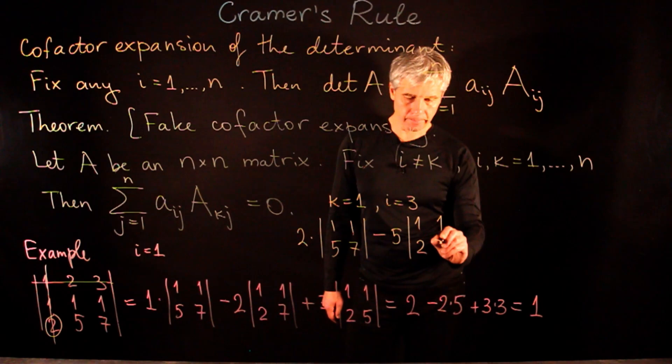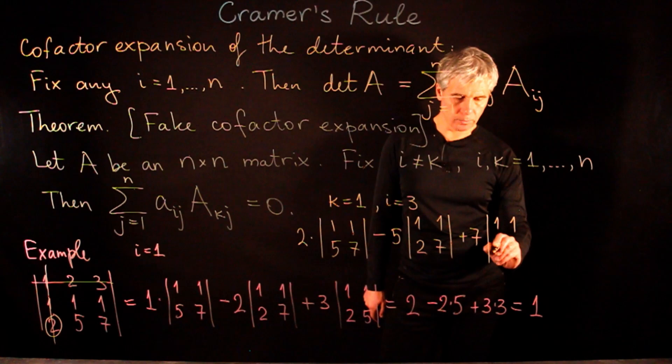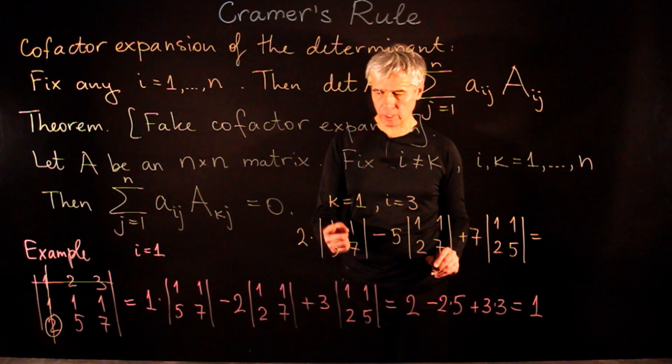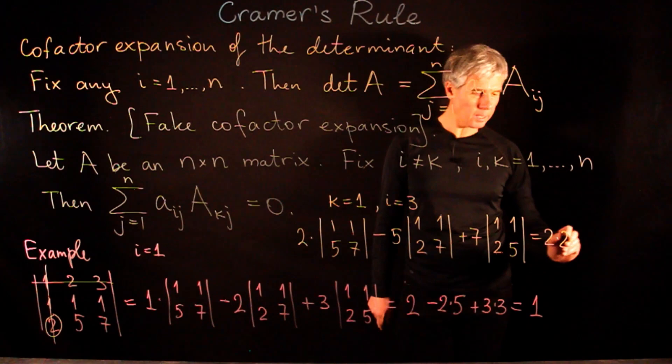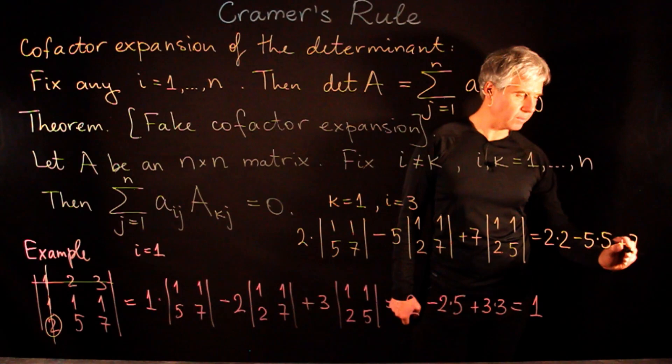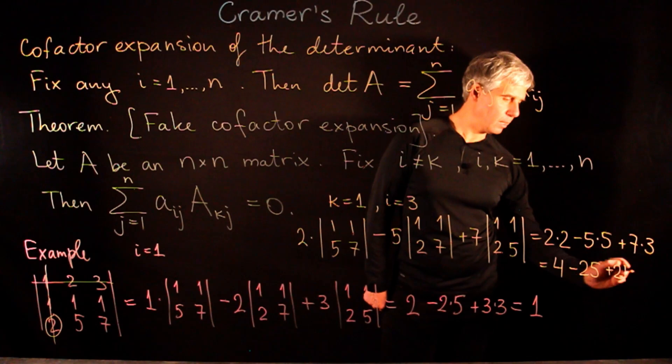Then minus 5 times the same cofactor [1,1; 2,7], and the last entry is 7 times the cofactor [1,1; 2,5]. Computing: 2 times 2 = 4, minus 5 times 5 = 25, plus 7 times 3 = 21. So this is 4 minus 25 plus 21, and the result is 0, exactly as predicted by the fake cofactor expansion formula.